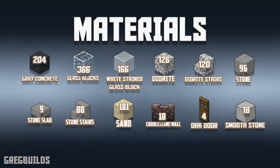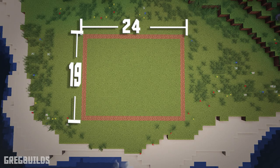Here's a complete list of the materials we'll need to build this aquarium. This entire build project will require a 24 block by 19 block area spacing. I marked my area with coarse dirt blocks, and you can do the same — that way we'll know how wide the layout is before we start the build.